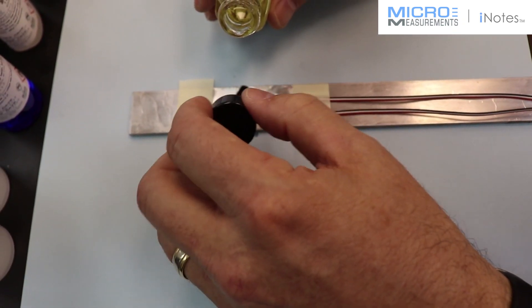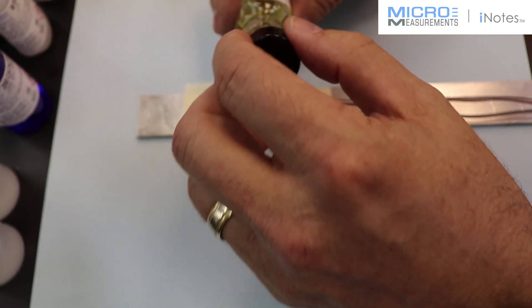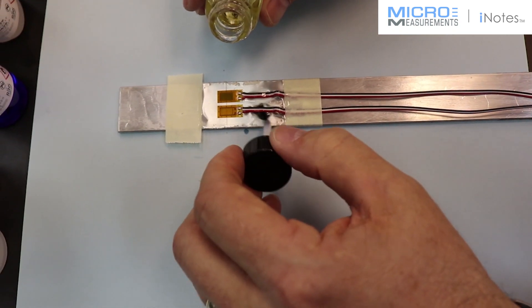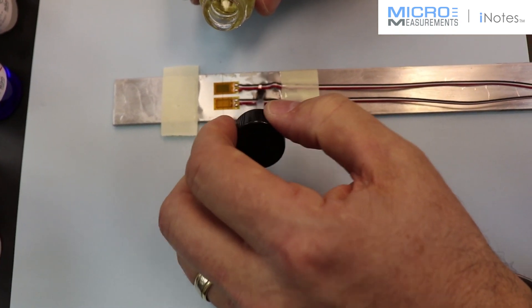And I'm just going to coat the entire area between the two pieces of tape. Just coat that whole area. And just, again, just sort of mop it. Make sure you've got a good thick coating in and around the solder connections. Brush a little bit up underneath the lead wire.